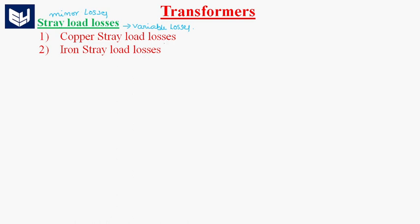One is copper stray load losses and another one is iron stray load losses. Copper stray load losses occur in the winding of the transformer. Along with the normal copper losses, these are additional losses. Iron stray load losses are the losses which occur in auxiliary iron parts of the transformer.